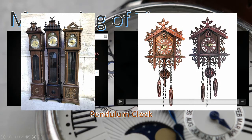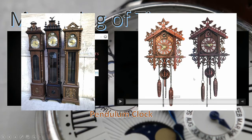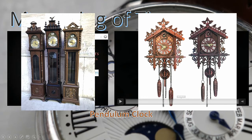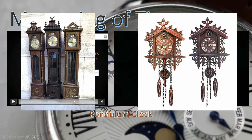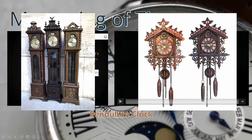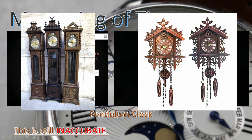The downside of the pendulum clock is that if the weight goes down and you don't notice it, you cannot get the exact time. You need to watch it frequently to reset the weight, so this is still inaccurate.